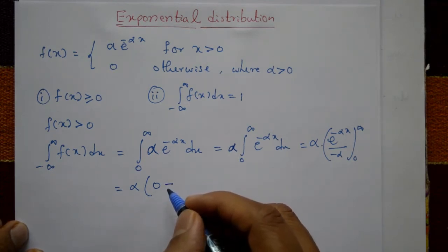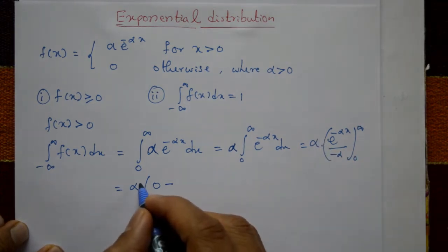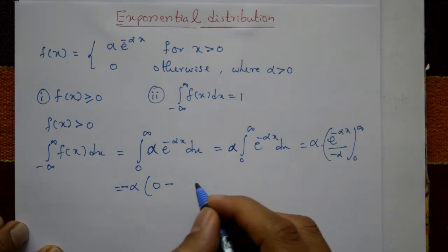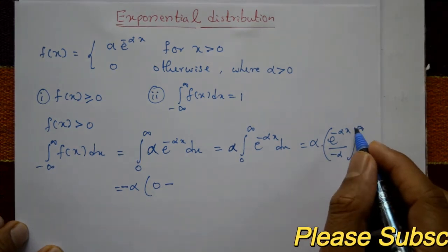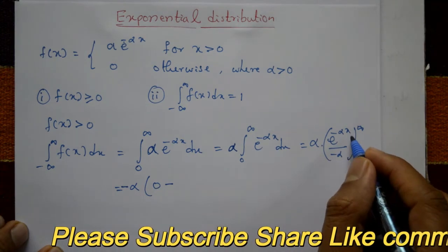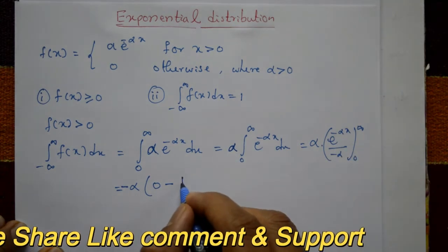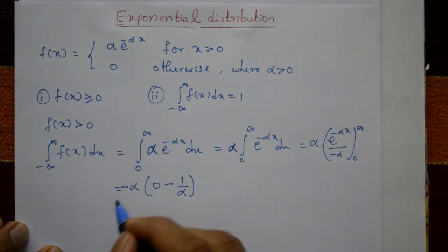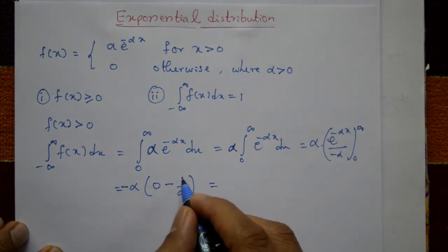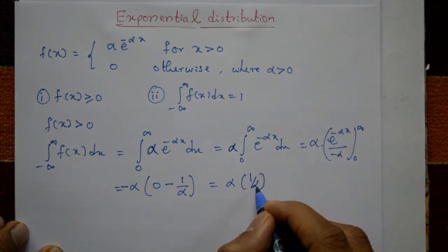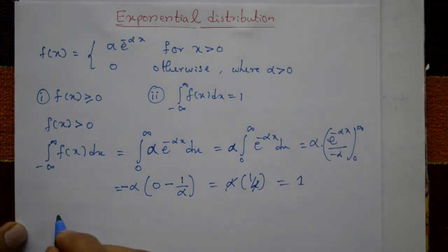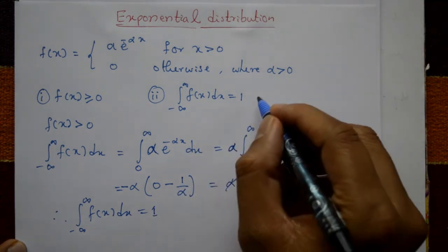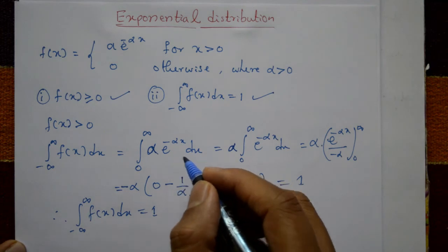The minus sign is taken outside. Putting x equal to infinity, the first term is zero. For the lower limit, putting x equal to zero, e^0 equals one, giving one over alpha. So we have: minus alpha times minus one over alpha. Alpha cancels, leaving one. Therefore the integration from minus infinity to plus infinity of f(x) dx equals one. The second condition is satisfied, and therefore the function is a continuous probability distribution.